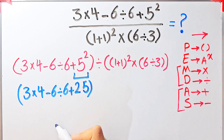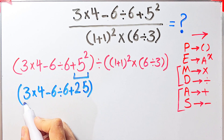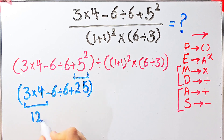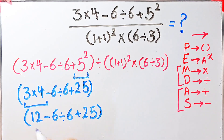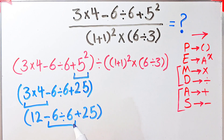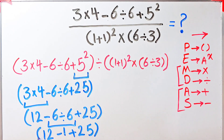Now we have three times four, then minus six divided by six, then plus 25. We have multiplication, subtraction, division, and addition. First we simplify the multiplication: three times four equals 12. Now we have 12 minus six divided by six, then plus 25. Next we simplify the division: negative six divided by six equals negative one. So we have 12 minus 1 then plus 25. 12 minus 1 equals 11, and 11 plus 25 equals 36. The final answer of this part equals 36.